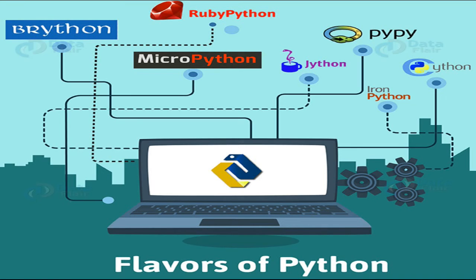Brython stands for Browser Python — it is an implementation of Python that runs in the browser. RubyPython acts as a bridge between Python and Ruby interpreters; it marshals data between Python and Ruby virtual machines. PyPy is Python implemented in Python itself, which makes it faster and easier to experiment with, though the standard implementation remains CPython.